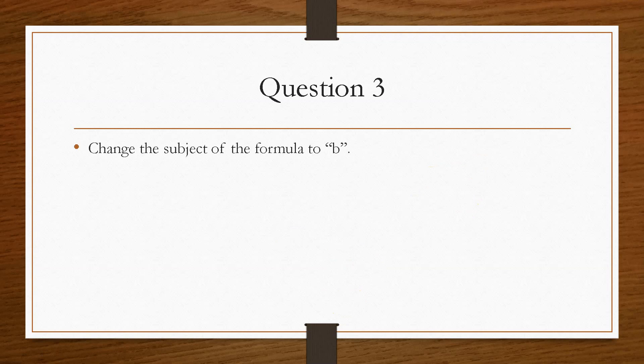And then question 3 is we have to change the subject of the formula to b. Now this is a similar exam style question in that we have a square root and we have a square involved here. We also have multiplication and subtraction as well. So this combines all three of the rules. And there is a specific sequence that you should follow. When you have a square root and the variable you want is inside it, you must get rid of the square root first.